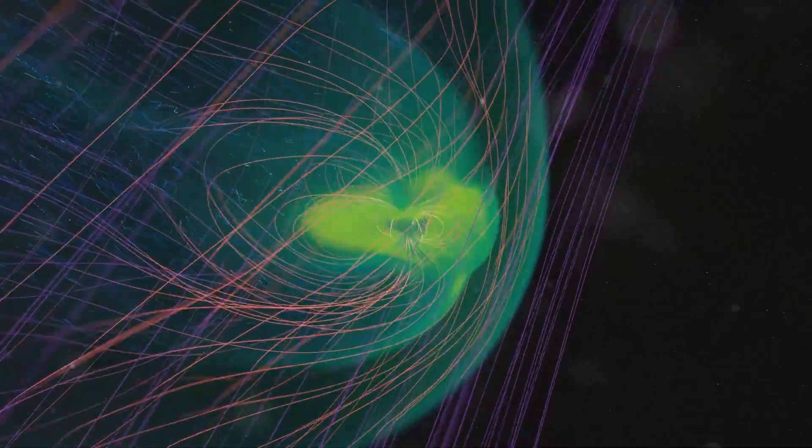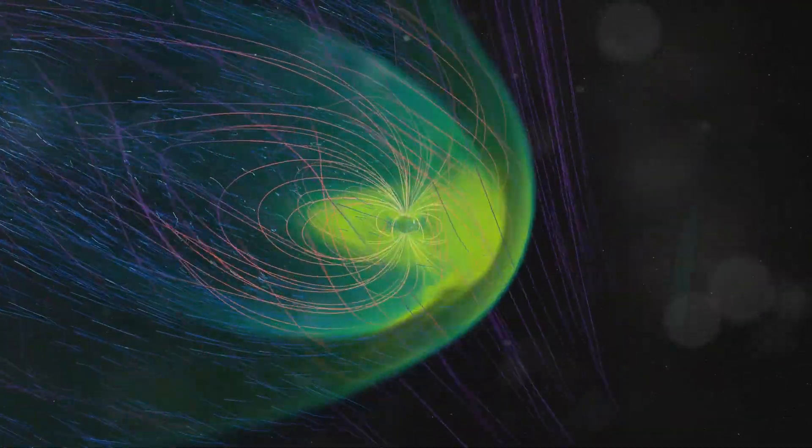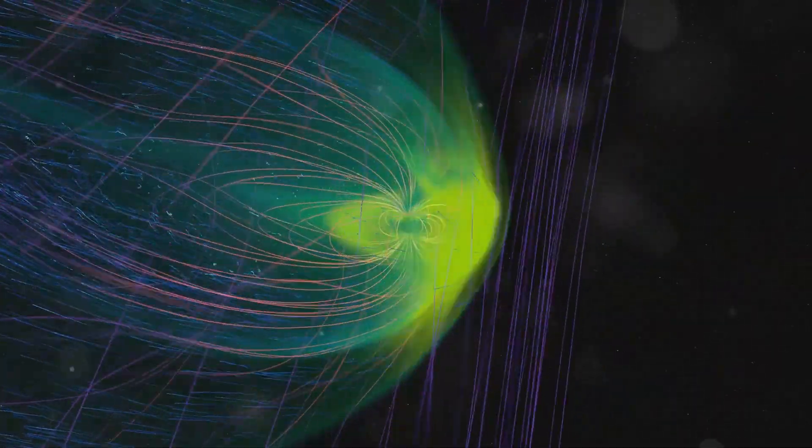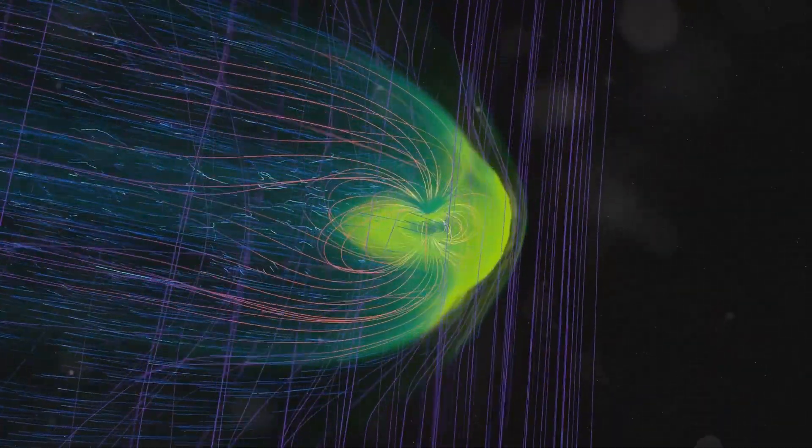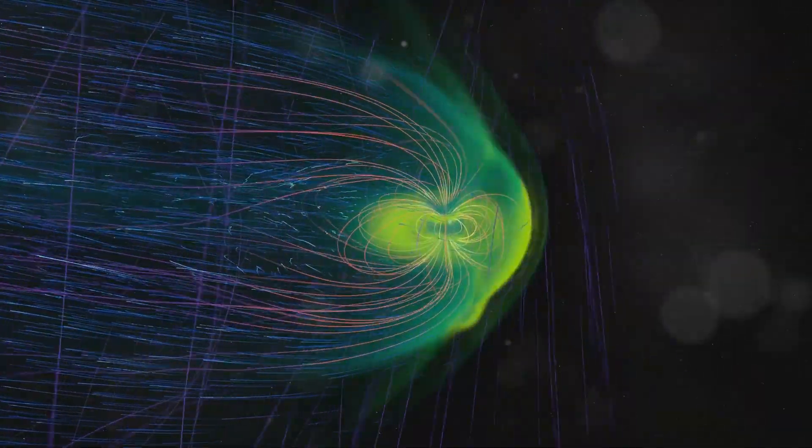If this trend continues, and it's looking like it might, we could be heading toward a future where Earth's magnetic shield becomes a little patchier, a little less predictable, and a lot more important to watch.